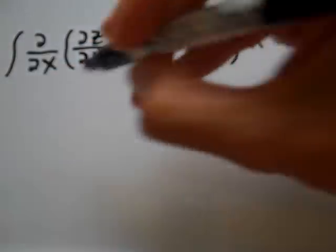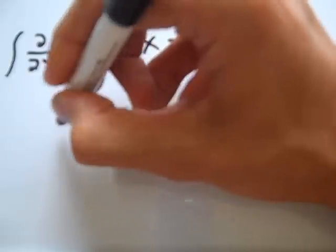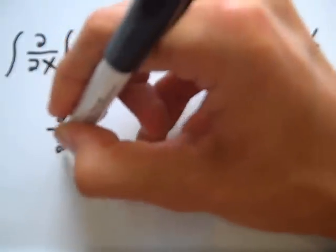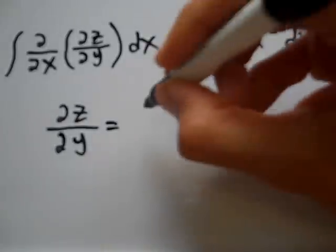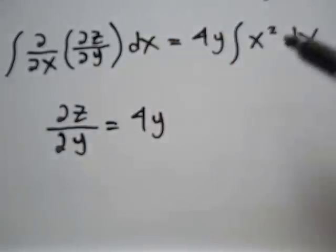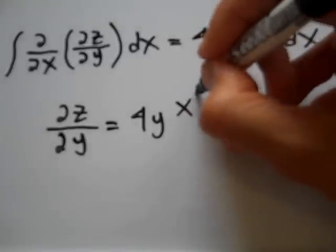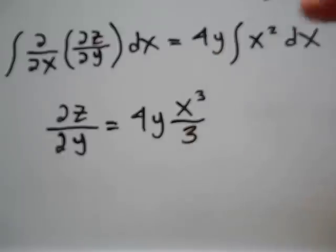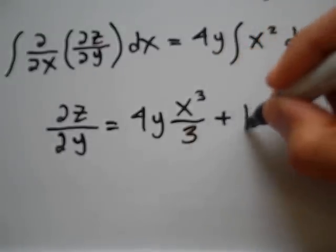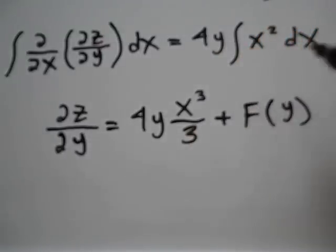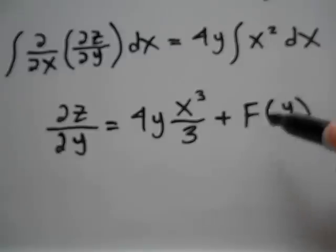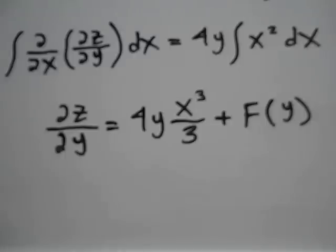When I integrate the left-hand side of this equation, I have the partial derivative of z with respect to y is equal to 4y. Utilizing the power rule for integration on the integral of x squared, I get x cubed over 3, and I introduce an arbitrary function of y, which I will call f(y). Since I'm integrating with respect to x, I need to introduce this arbitrary function of y — it's like the constant of integration, but it's some arbitrary function of y.